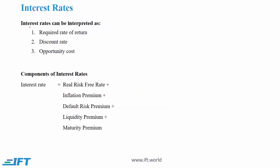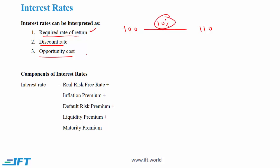Time value of money. Interest rates can be interpreted as a required rate of return, a discount rate, or an opportunity cost. Let's say you invest $100 today and you require $110 at the end of one year. In this case the return that you are requiring is 10%, and that is one interpretation of interest rates.